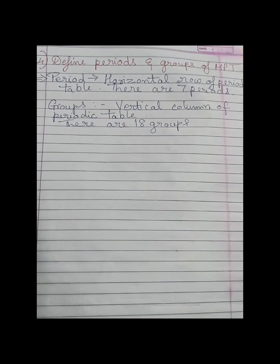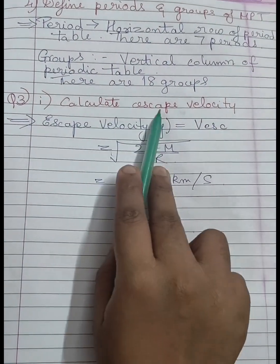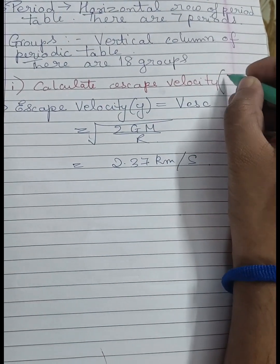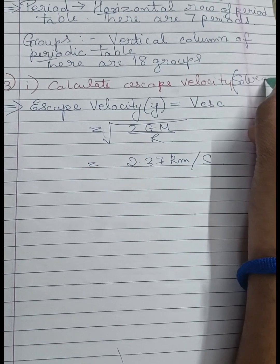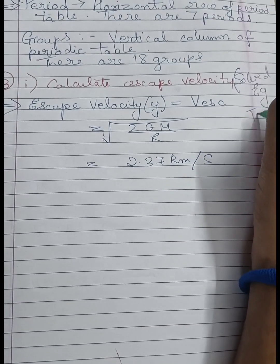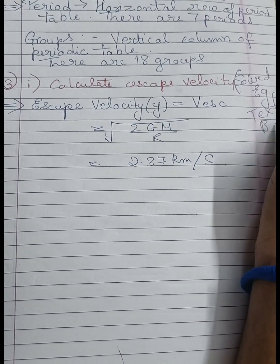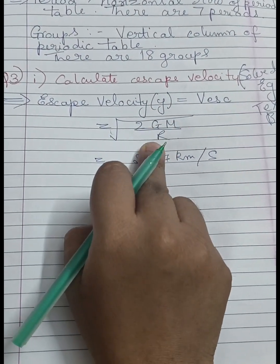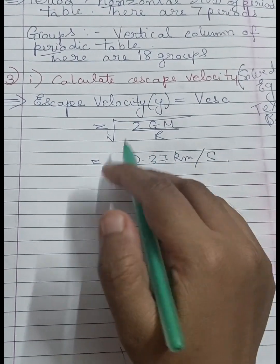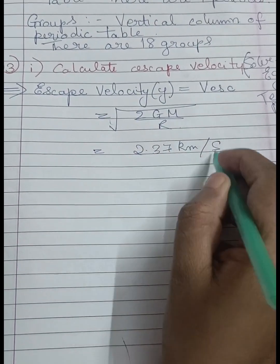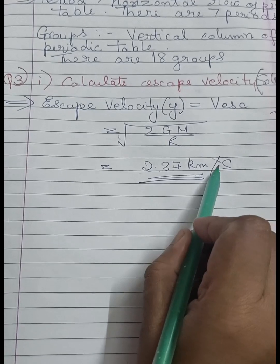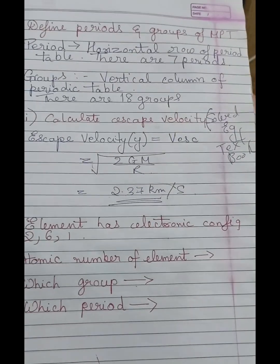Question 3: Calculate escape velocity. The formula is the square root of 2GM/R. This calculation is tough, but the answer is 2.37 km per second. Next: an element with electronic configuration 2, 6, 1 — what element is it? It is sodium.